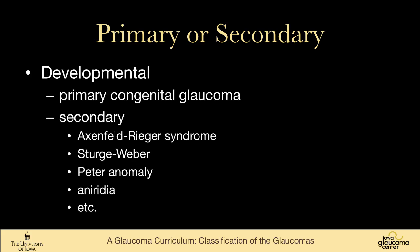In the developmental category, you would divide it into primary congenital and then all the secondaries. Secondaries would include things like Axenfeld-Rieger syndrome, Sturge-Weber, Peters anomaly, Aniridia, etc. We're not going to have big tables covering all of these here, because as we work through this curriculum we're going to talk about all of them.